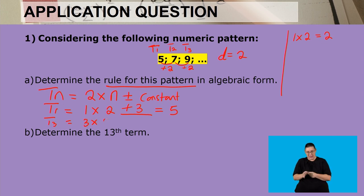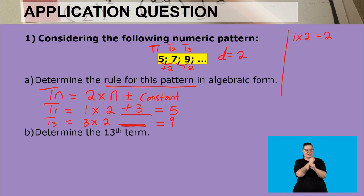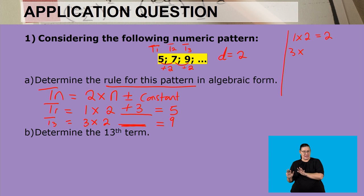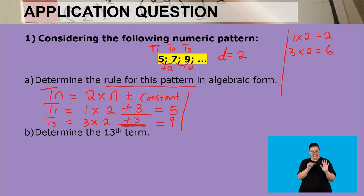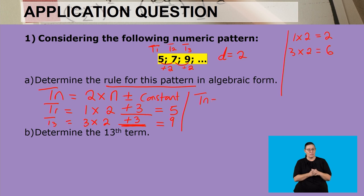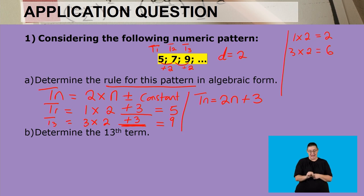Let's verify with the third term: 3 multiplied by 2, and we need to add or subtract something to get to 9. Three multiplied by 2 is 6, and from 6 we add 3 to get 9. So that constant value is a positive 3. This means our rule is tn = 2n + 3, where 2 is the constant difference multiplied by the term number n, plus 3.